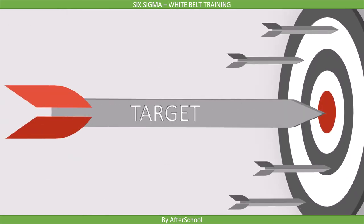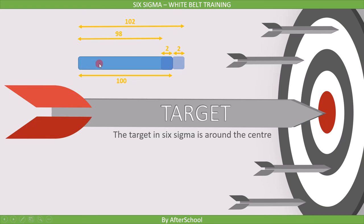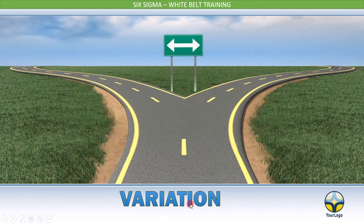The seventh philosophy of Six Sigma is target. The target in Six Sigma is around the center, which means this is where you would target your process to be. For example, if you are manufacturing a shaft which is 100mm in length, it can go 2mm plus or 2mm minus — so the shaft can be anything between 98 to 102mm. But in Six Sigma, your target would be to hit 100, meaning at the center, and by doing this you will try to minimize variation.